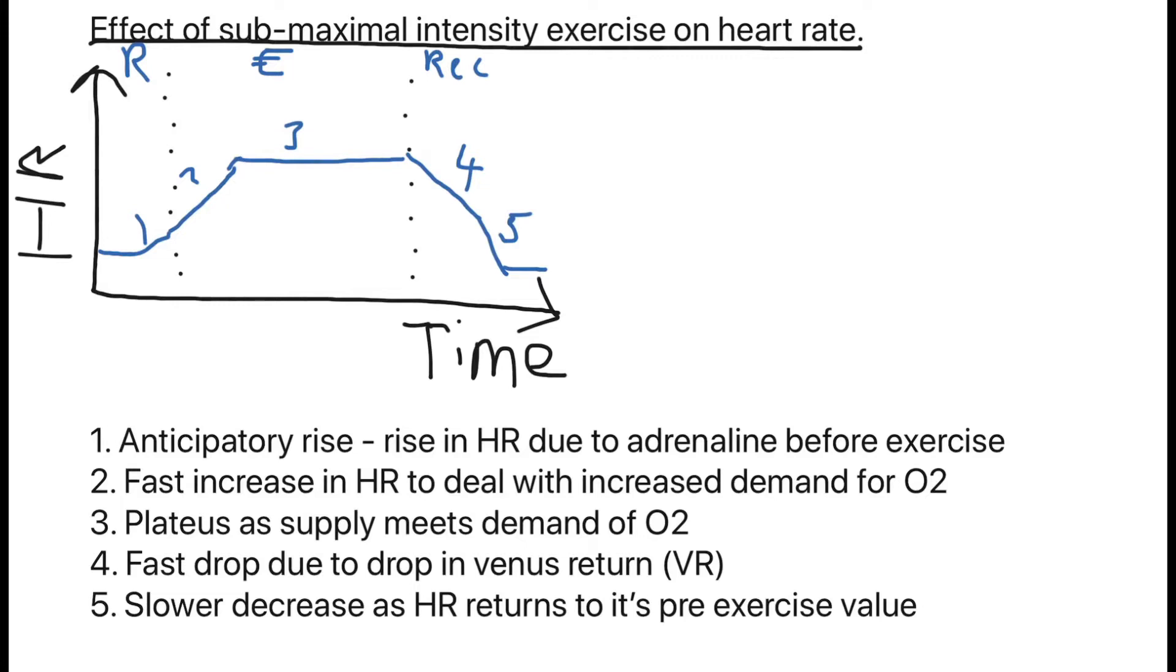This is the effect of sub-maximal intensity exercise on heart rate. When looking at this graph you've got heart rate up the y-axis in beats per minute and time across the x-axis which should be there in minutes.